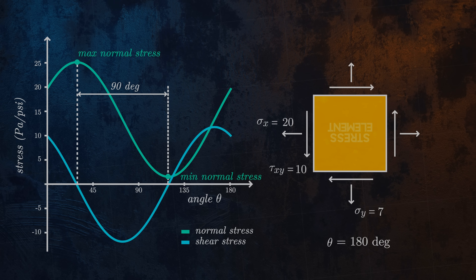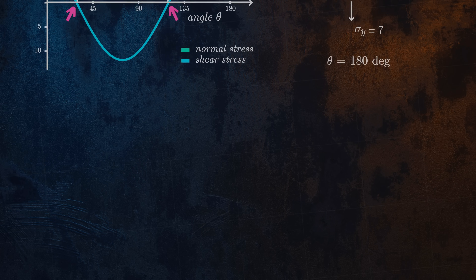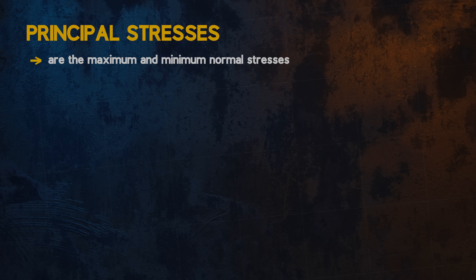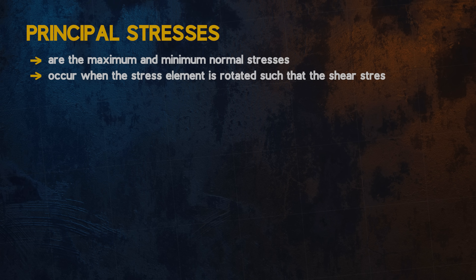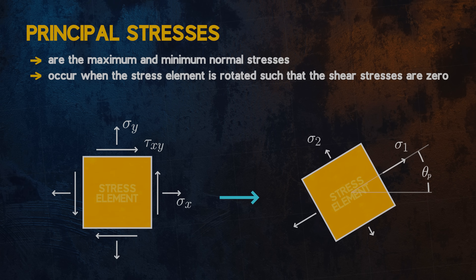Another interesting observation is that when the normal stresses are at their maximum or minimum values, the shear stresses are zero. These faces on which the shear stresses are zero are called the principal planes, and the corresponding maximum or minimum normal stresses acting on these planes are known as the principal stresses. Principal stresses are very important — they are the maximum and minimum normal stresses acting on our stress element. They always occur when the stress element is rotated such that the shear stresses are zero, as shown here. We denote the maximum and minimum principal stresses using the symbols sigma 1 and sigma 2, respectively.